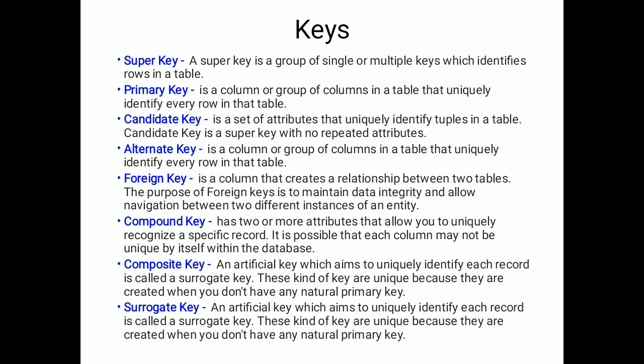Composite key is designed when we do not have any natural primary key — it is an artificial key which aims to uniquely identify each record. Similarly, surrogate key is also an artificial key which aims to uniquely identify each record, and these keys are unique because they are created when there is no natural primary key available.